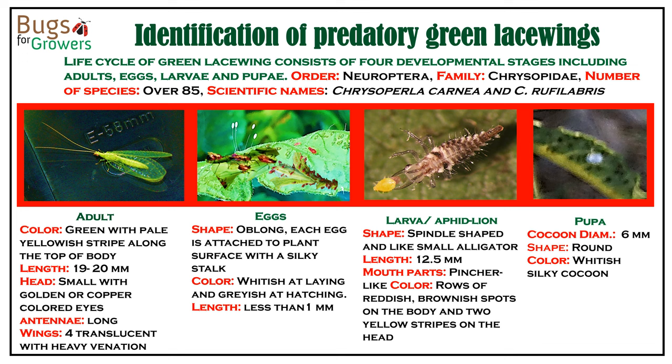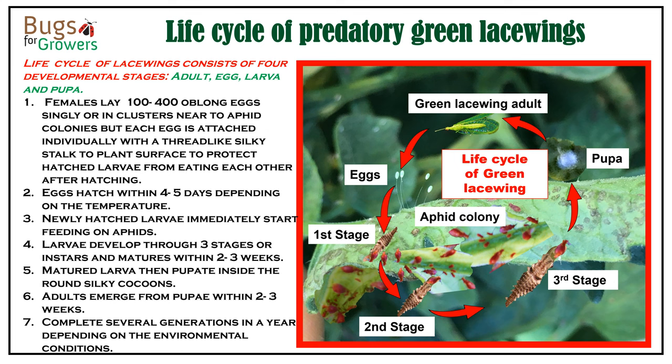Larvae of green lacewings are very small, about 12 mm long, spindle shaped, and they all look like small alligators. They have sickle-shaped mandibles that they use for puncturing the aphids. Larvae are generally reddish brown in color with two yellow stripes on the head. Third stage larvae generally pupate inside silky cocoons, which are whitish in color and about 6 mm in diameter.